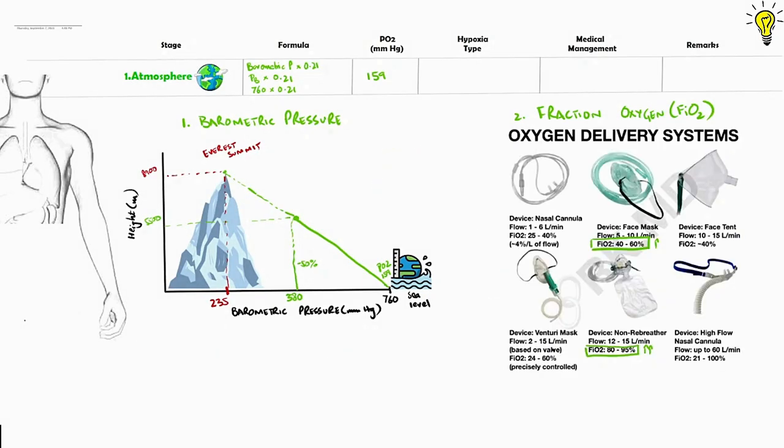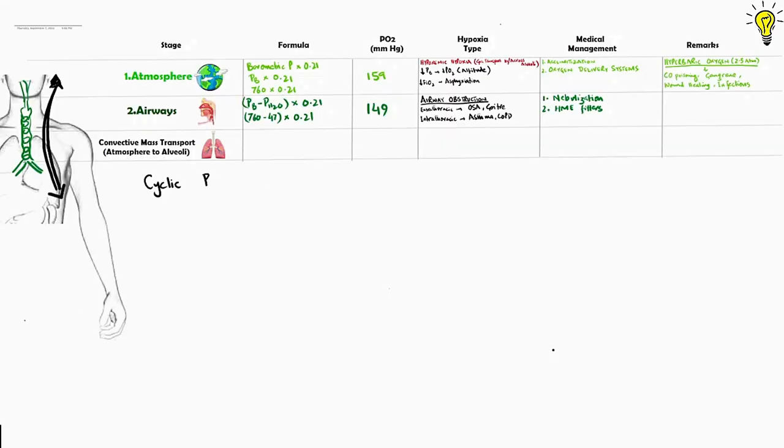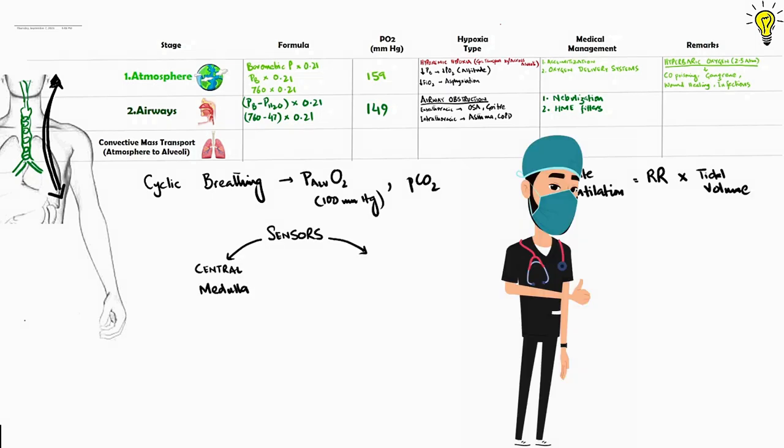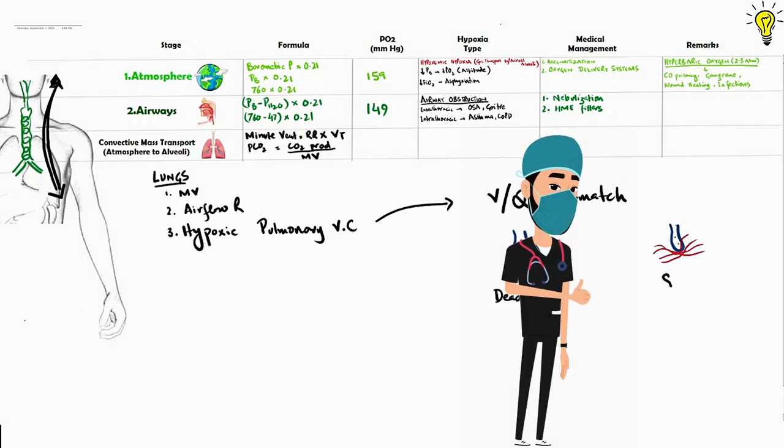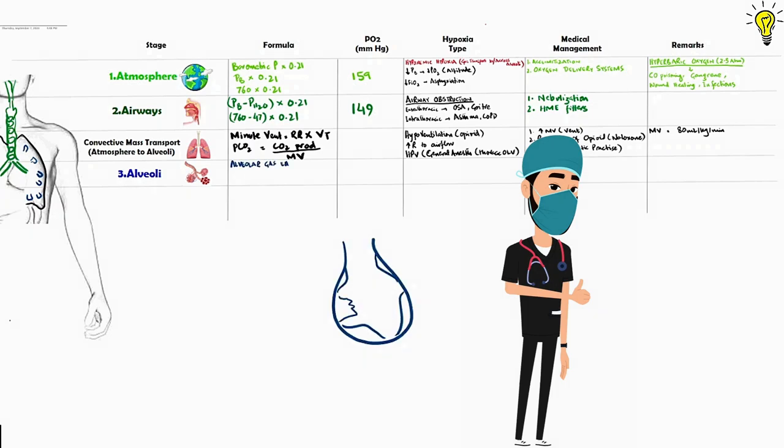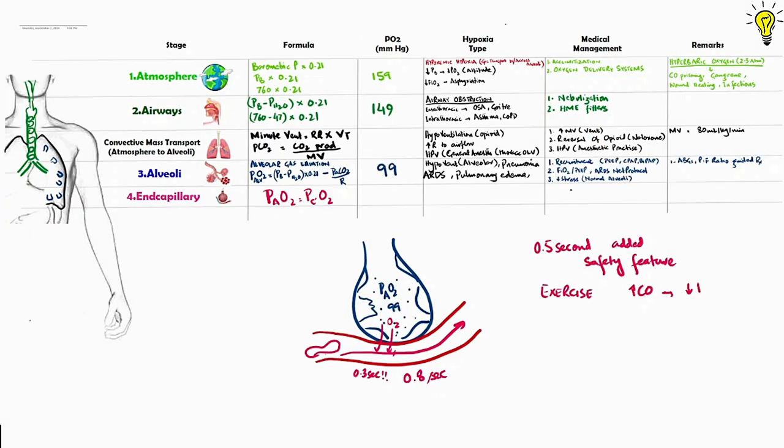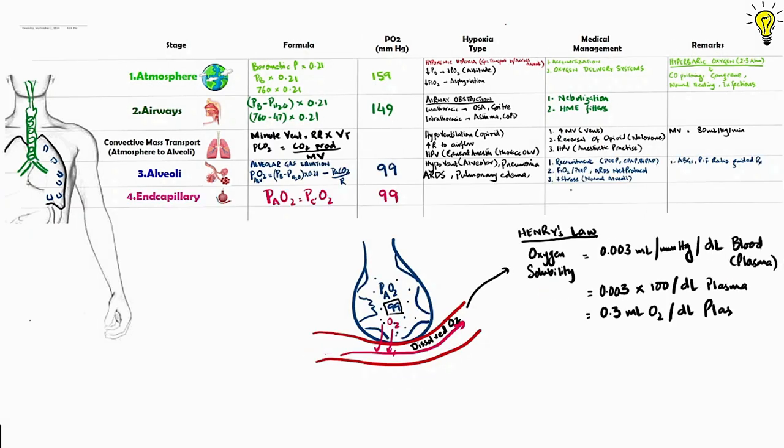Today, we go one step further into understanding hypoxia types and integrating anomalies into oxygen cascade for logical therapeutic conclusions. We will cover the initial four stages of oxygen cascade from atmosphere to alveolo-capillary interface. Let's start then.